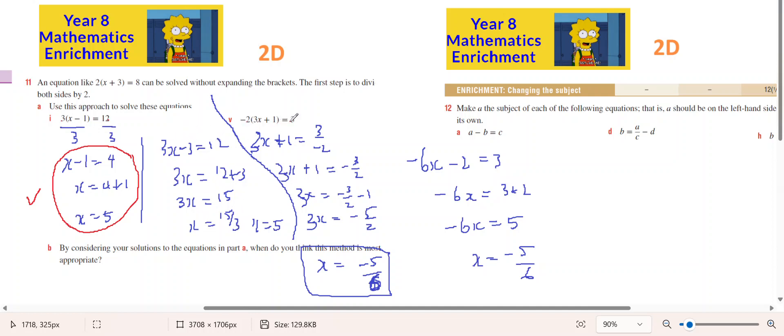But when negative 2 doesn't divide into 3, multiplying them out is the preferred option. So you've got a decision to make.